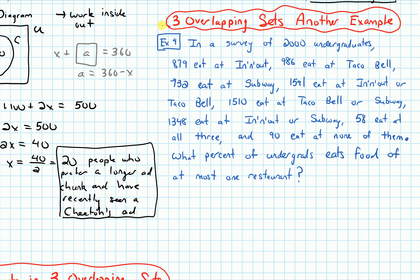In this video we will do another example with three overlapping sets. In a survey of 2,000 undergraduates, 879 eat at In-N-Out, 986 eat at Taco Bell, 732 eat at Subway, 1591 eat at In-N-Out or Taco Bell, 1510 eat at Taco Bell or Subway, 1348 eat at In-N-Out or Subway, 58 eat at all three, and 90 eat at none of them. What percent of undergrads eats food at most one restaurant?